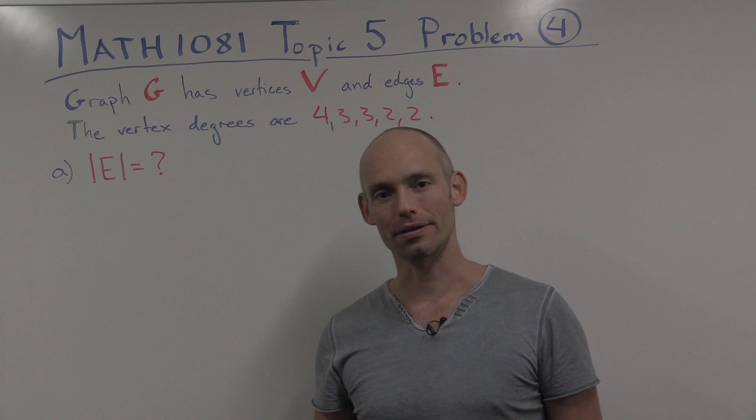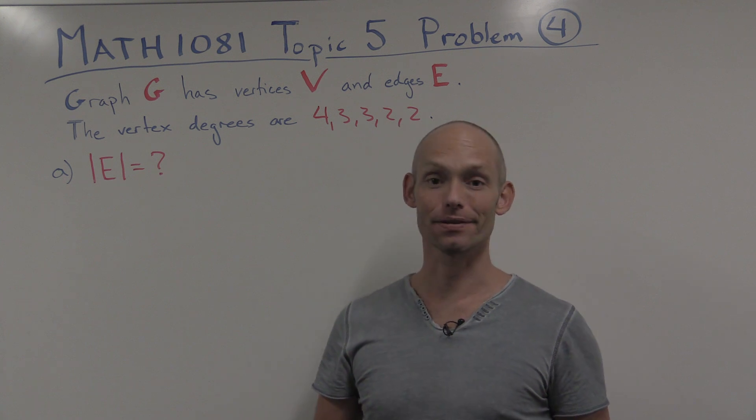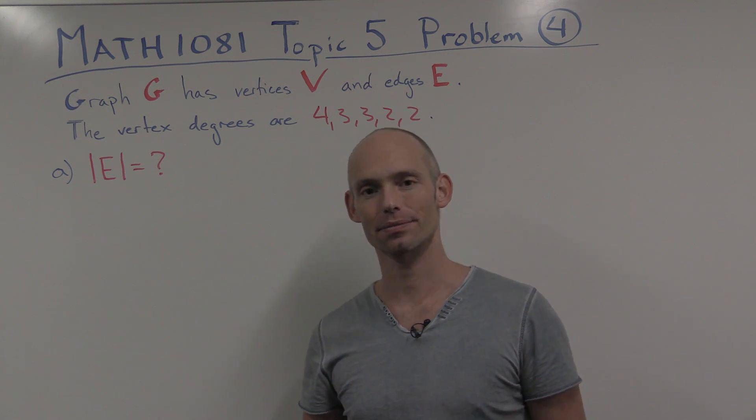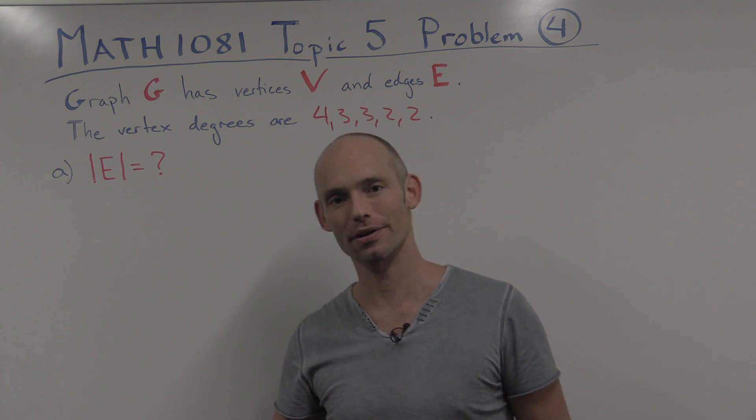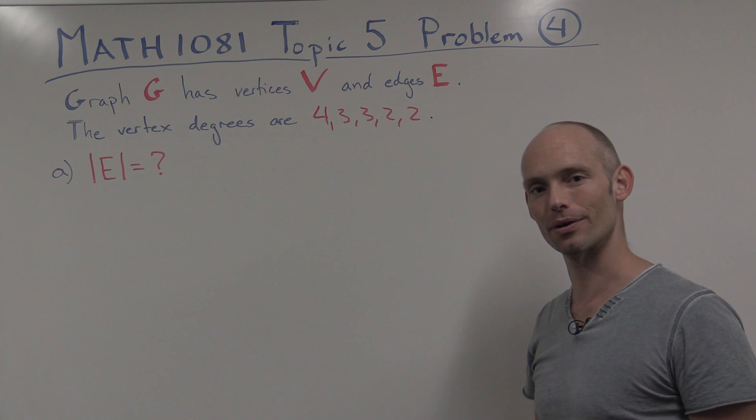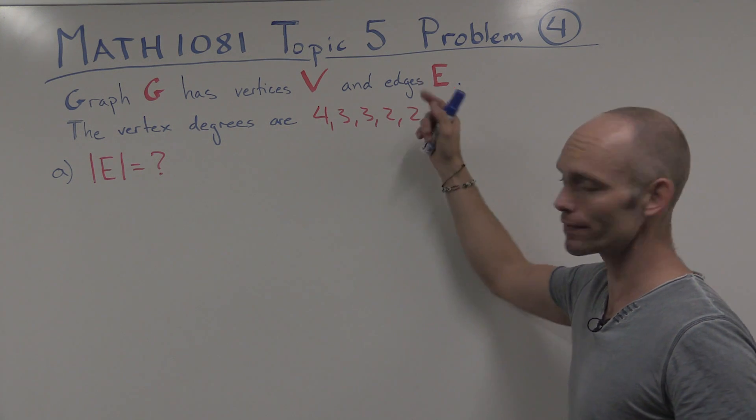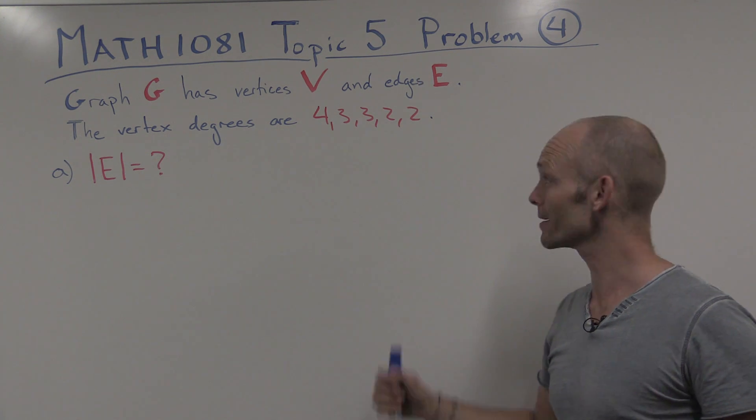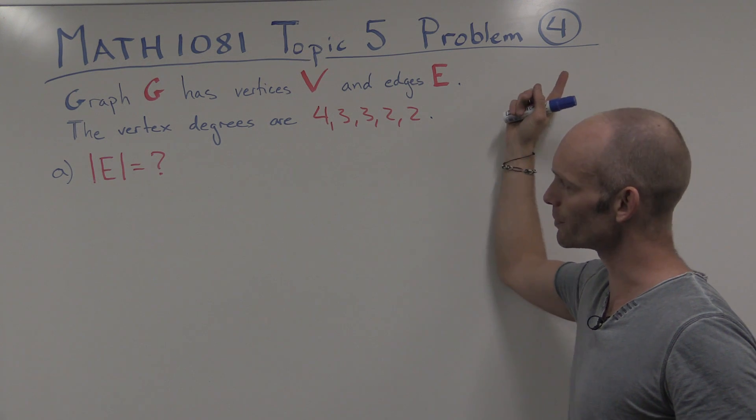Hi there. This is at the University of New South Wales at the School of Mathematics and Statistics. My name is Thomas Britz and I'll be going through this problem from discrete math, Math 1081, Topic 5, the topic on graph theory. And we're going to be looking at problem 4.